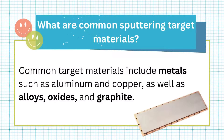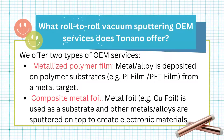What are common sputtering target materials? Common target materials include metals such as aluminum and copper, as well as alloys, oxides, and graphite.